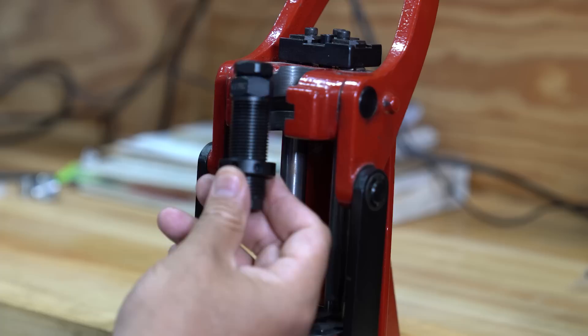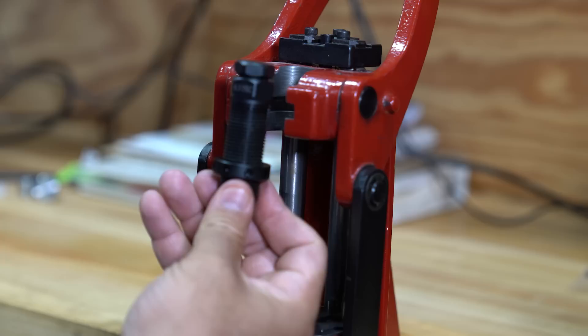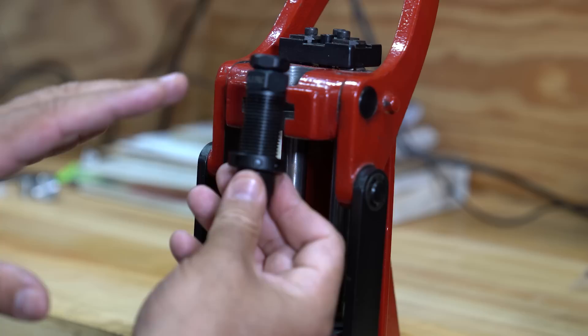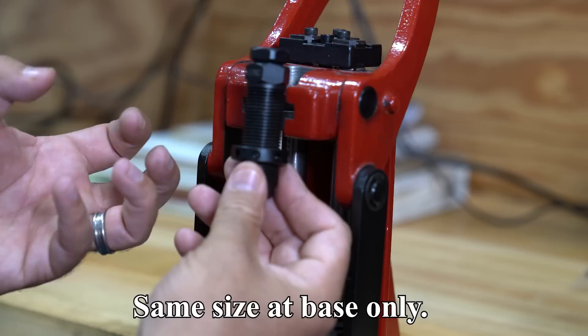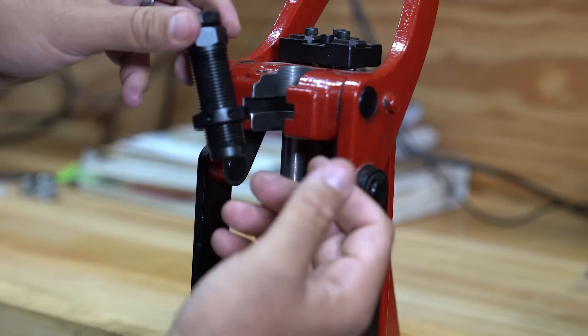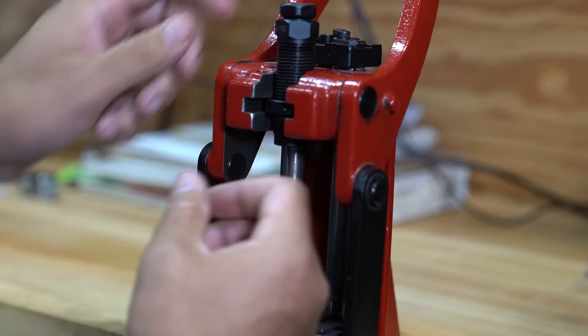So this is a 6.5 PRC. What this will do is it will also size the base of the case. Now, this is not a small base die, but it is the same size as your full length sizing die. So it's just going to give that base another small squeeze, and that's going to help you minimize clickers.